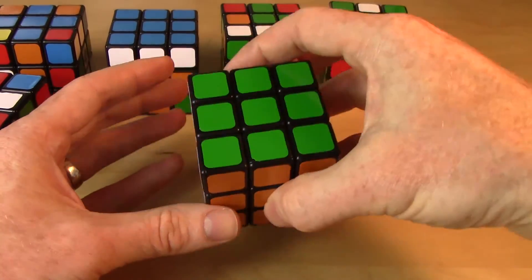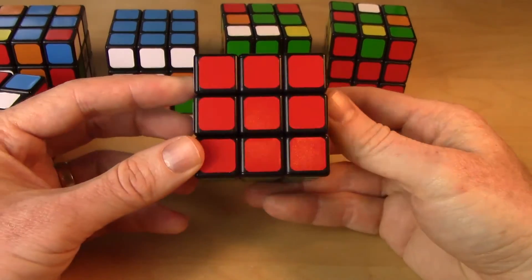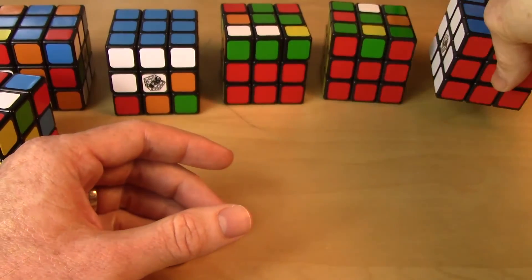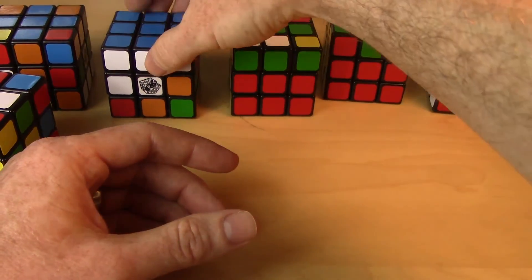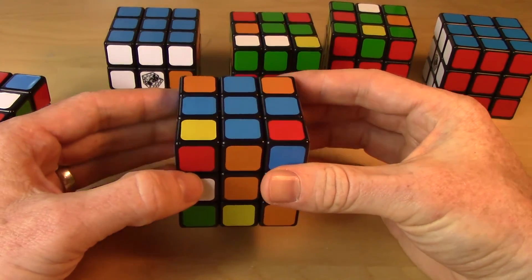Step number five is finishing off the edge pieces. And voila, we've solved our cube. Alright, so those are the five steps. Let's get to them. The next video, we're going to go with step one, making the cross. See you then!